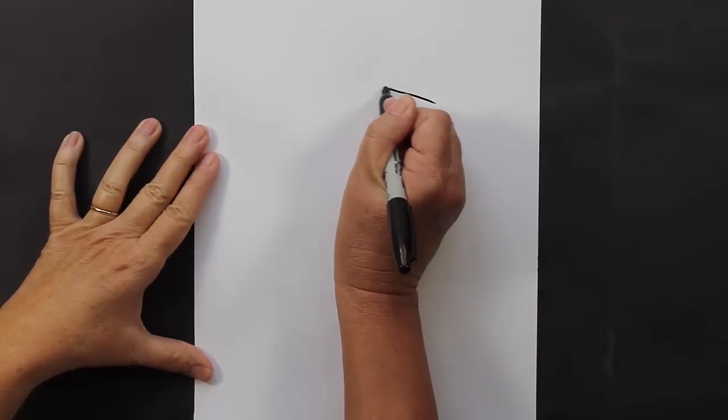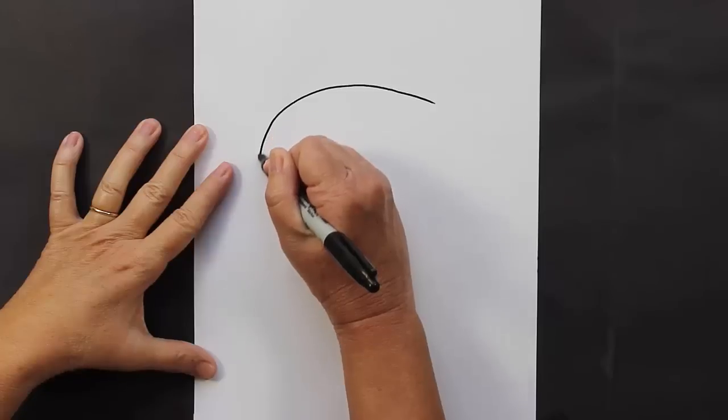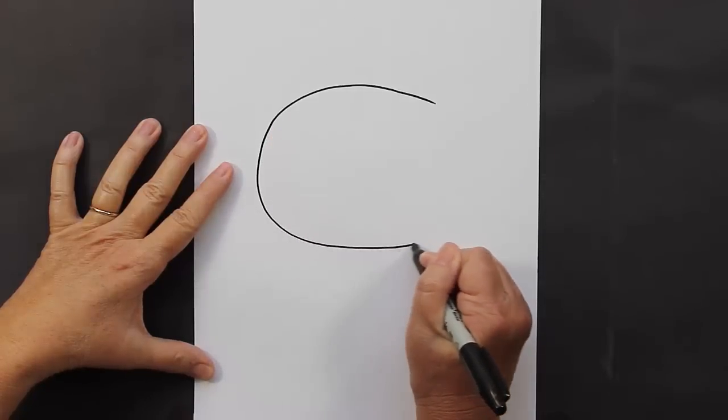We are going to make a shape that looks like this. It's an oval shape.